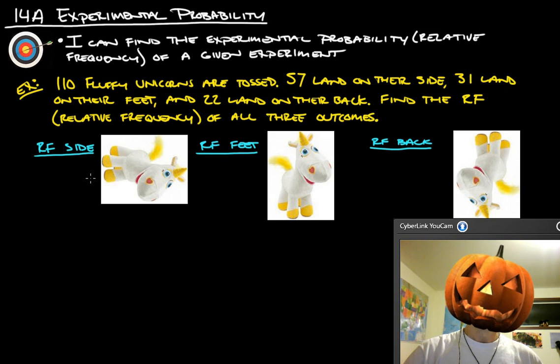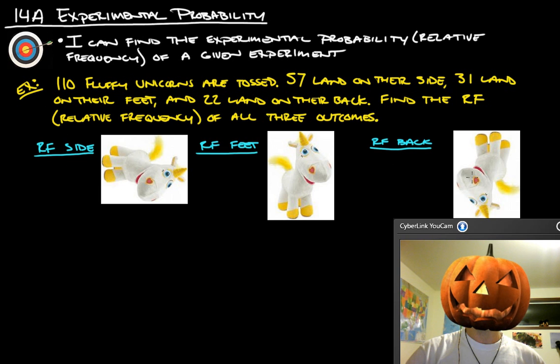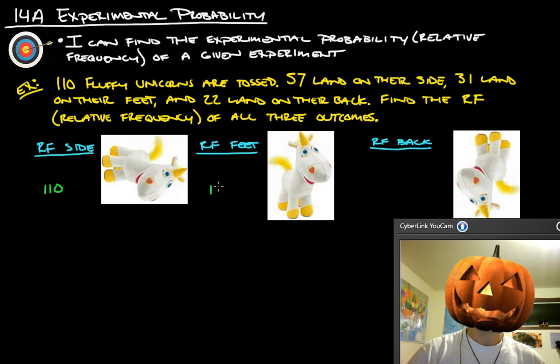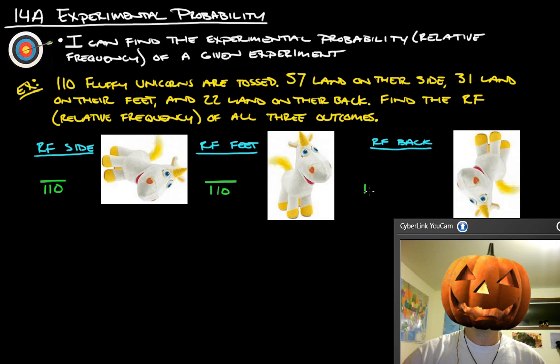So we have here, we'll figure out the relative frequency for the side, for the feet, and for the back. We have 110 total possibilities, right? So that's going to be the bottom part of all of our fractions.